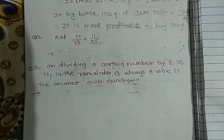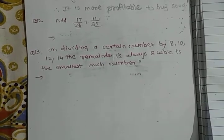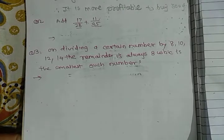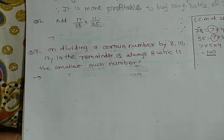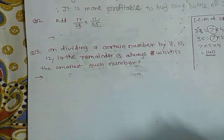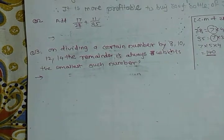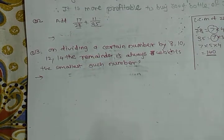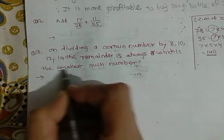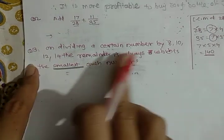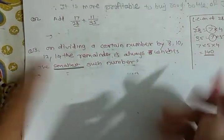Let's see the next question. On dividing a certain number by 8, 10, 12, and 14, the remainder is always 3. Which is the smallest number? See here there are so many solutions for this example, but the condition is smallest number. So first find out the LCM of 8, 10, 12, and 14.